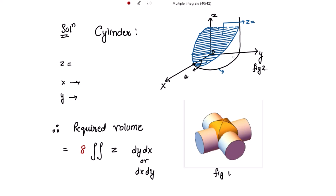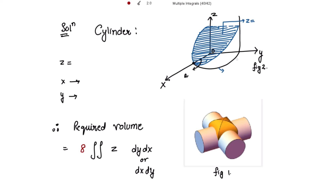In figure 2, only one-eighth of the required volume is shown. So it becomes eight times the volume shown in figure 2.